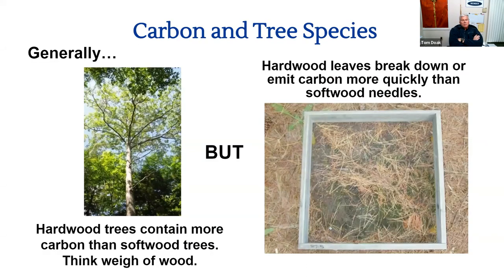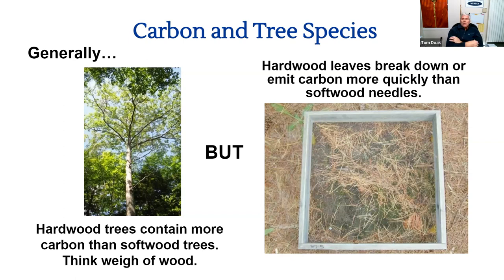What trees have the most carbon? Hardwood trees generally contain more carbon than softwoods — think of it in terms of weight: a heavier piece of wood has more carbon. As a side note, hardwood leaves break down quicker than softwood needles, so needles have more shelf life and don't release carbon back as quickly. Generally though, hardwood trees contain more carbon than softwoods.